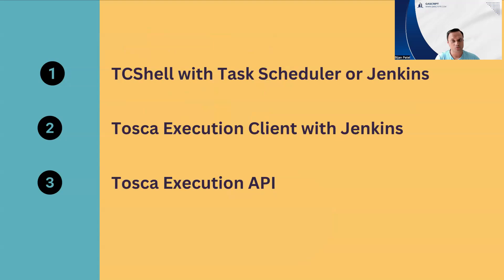To answer this particular question, you need to know all the different options available with Tosca. There are a couple of ways you can integrate the CICD tool with Tosca. The most popular option is obviously Jenkins — it's quite easy to integrate Tosca scripts with Jenkins so you can trigger and run your scripts directly from it. For the latest versions of Tosca, you have to work with the Tosca Execution Client, which is the latest addition to the CICD toolset. Previously they were using Tosca CI, but now they have moved to Tosca Execution Client, which is more of a script-based tool. It is more configurable, easy to set up, and can be integrated with any CICD client.